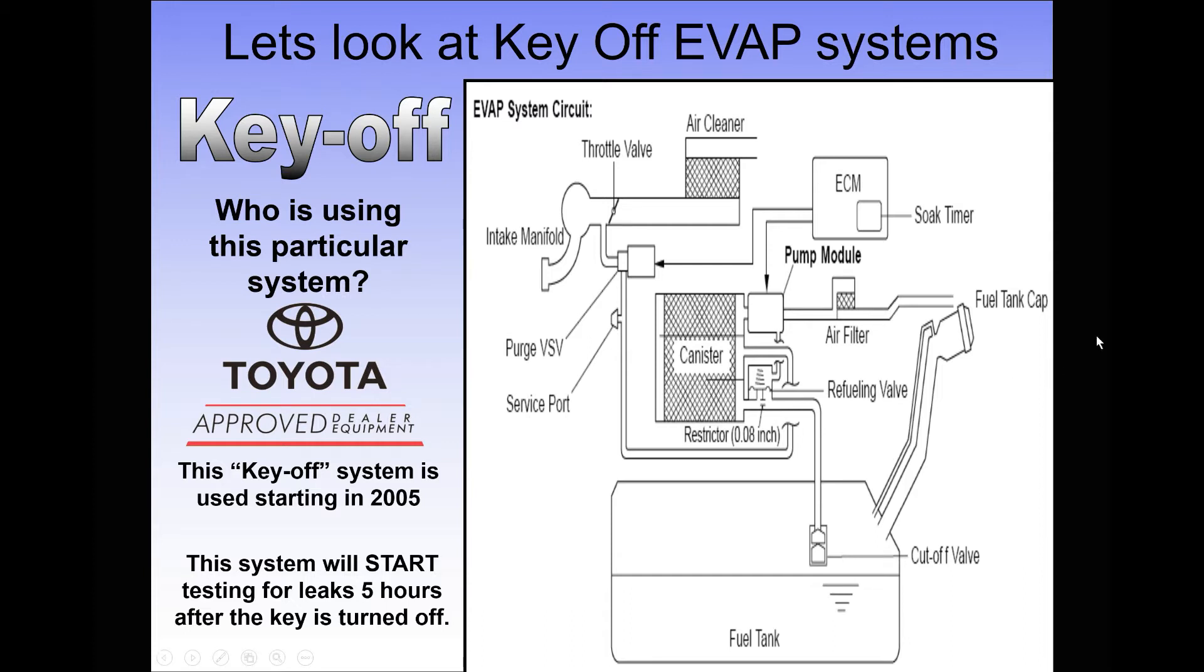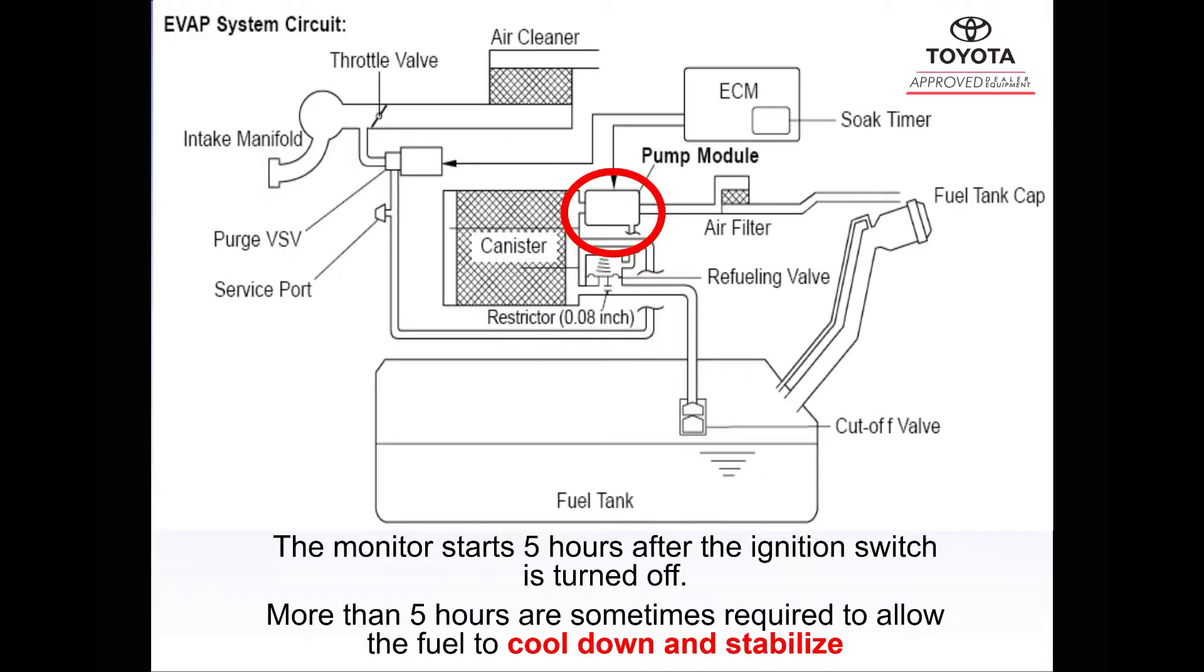The system has regular components: fuel tank, filler neck, gas cap, purge valve, just like any other EVAP system. Very similar to vacuum-based EVAP systems. But it has this pump module that includes an electric vacuum pump and an orifice to allow the system to self-calibrate. So what's unique is this pump module. Other than that, components are very similar to previous Toyota EVAP systems.